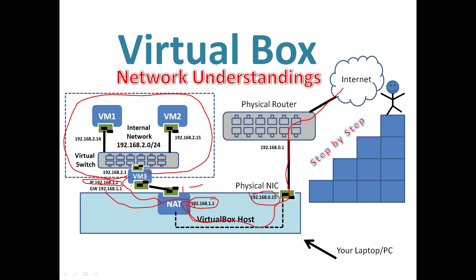So in the Internal Network setup, the router VM's next hop is the NAT interface, and from there traffic goes to the outside. Internal machines can communicate with each other directly. When they need to reach the internet, they send traffic to the internal gateway router, which passes it to the NAT interface and routes it out. That's how the internal network operates.